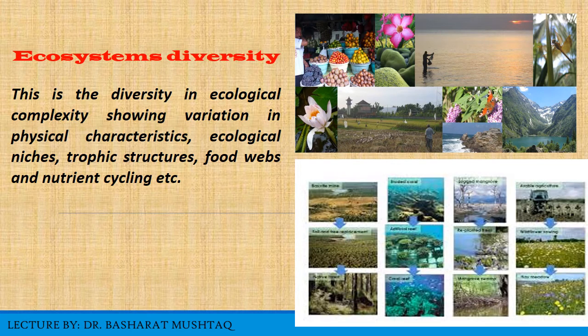The last hierarchical level is ecosystem diversity, sometimes called ecological diversity. This is the diversity in ecological complexity showing variation in physical characteristics, ecological niches, trophic structures, food webs, and nutrient cycling. Ecological diversity studies variations in the biological communities in which species live, exist, and interact. Depending upon abiotic resources and environmental conditions, an ecosystem develops its characteristic living organisms. For example, a pond is an ecosystem — it contains a set of flora and fauna different from a river, which is another ecosystem.